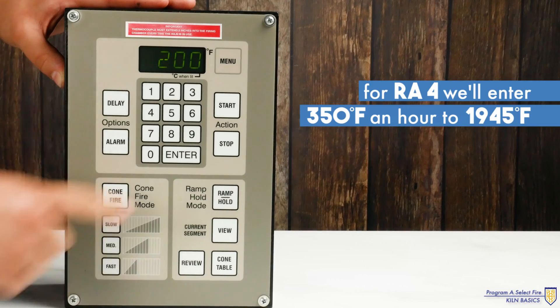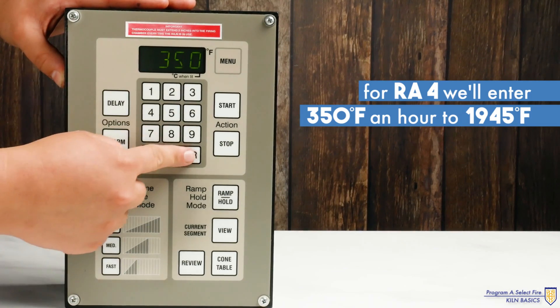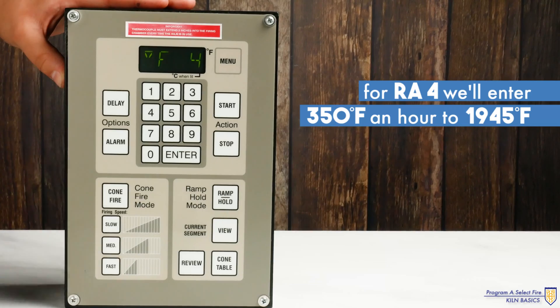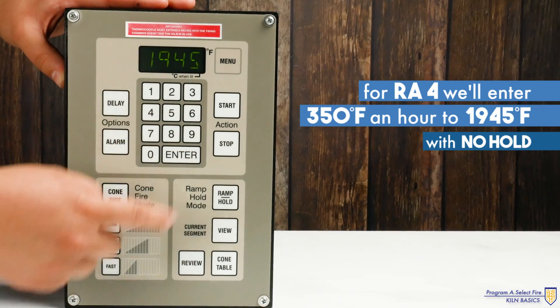For ramp 4 reading RA4 we'll enter 350 degrees Fahrenheit an hour to 1945 degrees Fahrenheit with no hold.